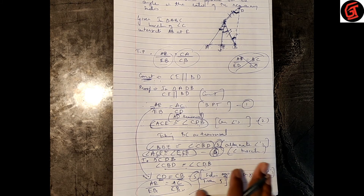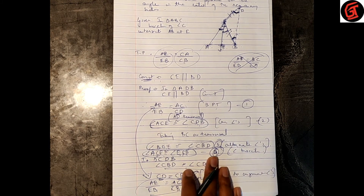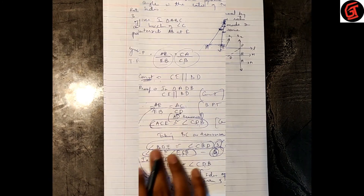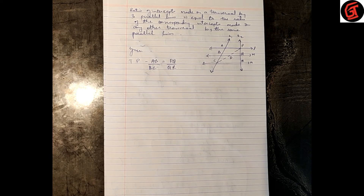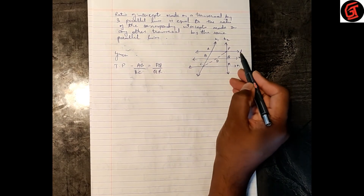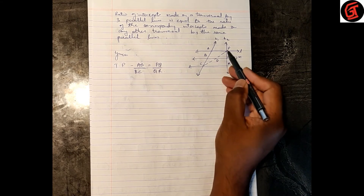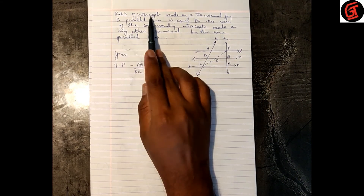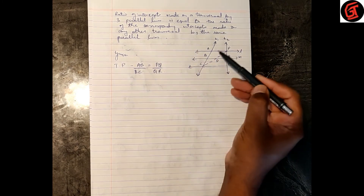Now we are going to learn a new property — an important property called the Property of Three Parallel Lines and Their Transversals. Three parallel lines are there and there are transversals. The property states: the ratio of intercepts made on a transversal by three parallel lines is equal to the ratio of the corresponding intercepts made by any other transversal by the same three parallel lines.